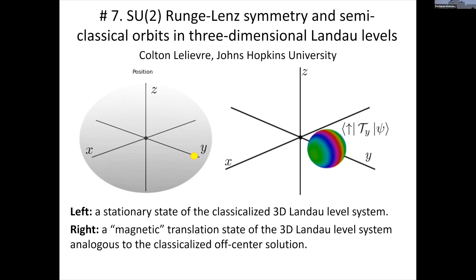Looking at the quantum Hamiltonian, I am able to generalize a magnetic translation that keeps these states within the 3D lowest Landau level. I show the analogy to the 2D case and demonstrate that the symmetry operators which describe this classical state generate the magnetic translation of the 3D state.